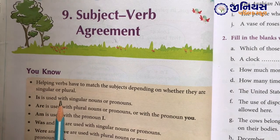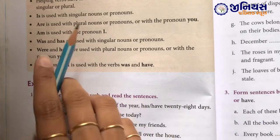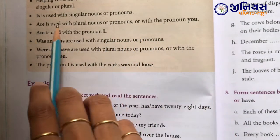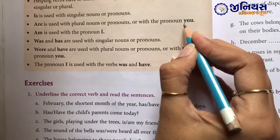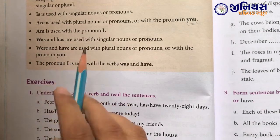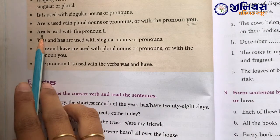Is is used with a singular noun or a pronoun. Are is used with plural nouns or a pronoun, or with the pronoun 'you'. Am is used with the pronoun 'I' — I ke saath hum am hi likhenge.